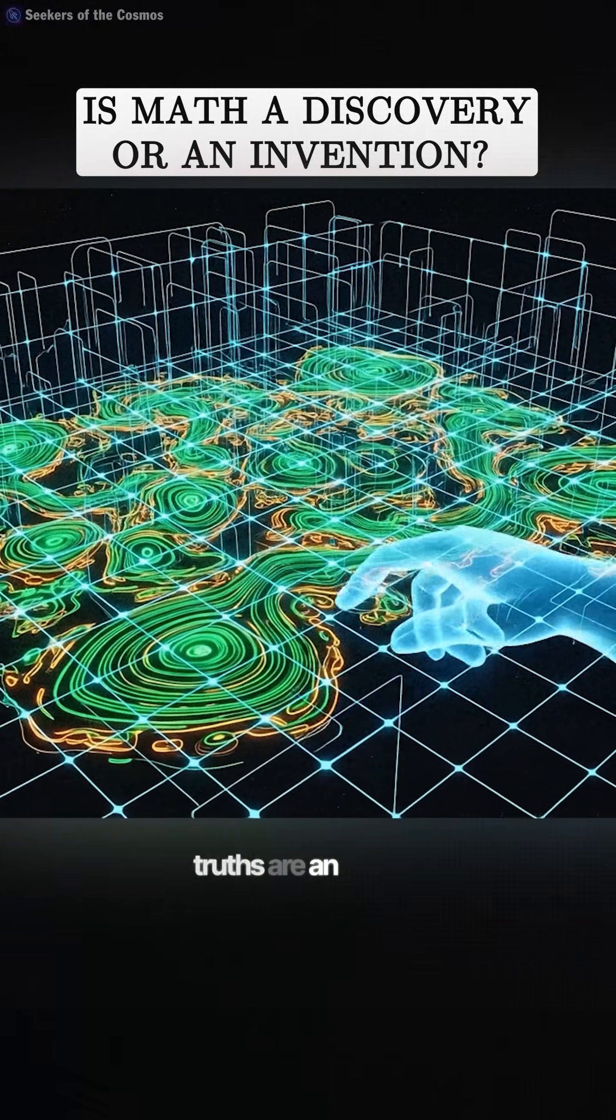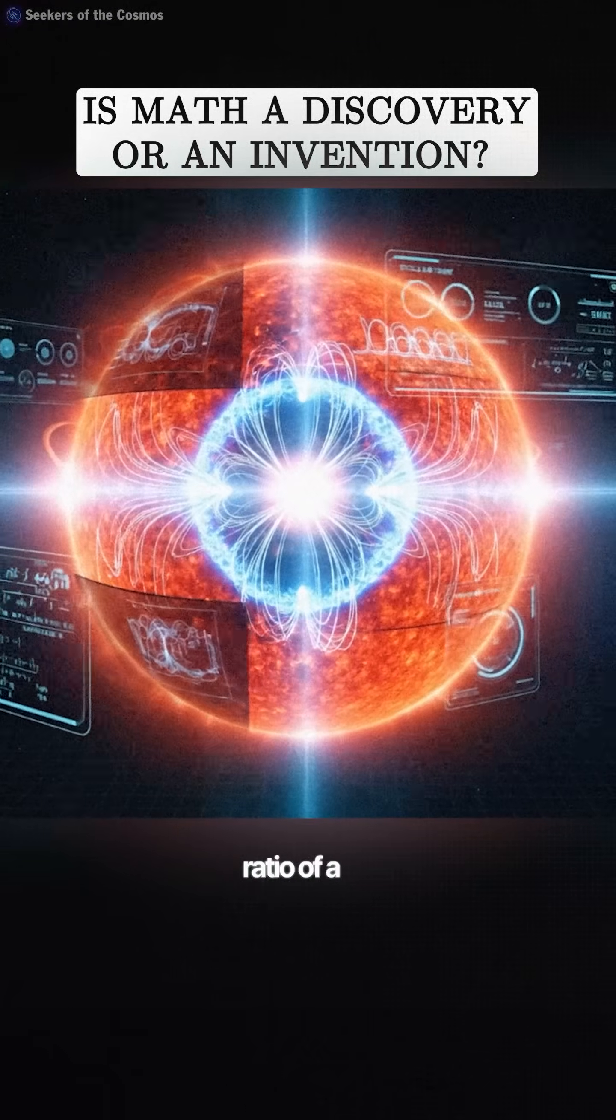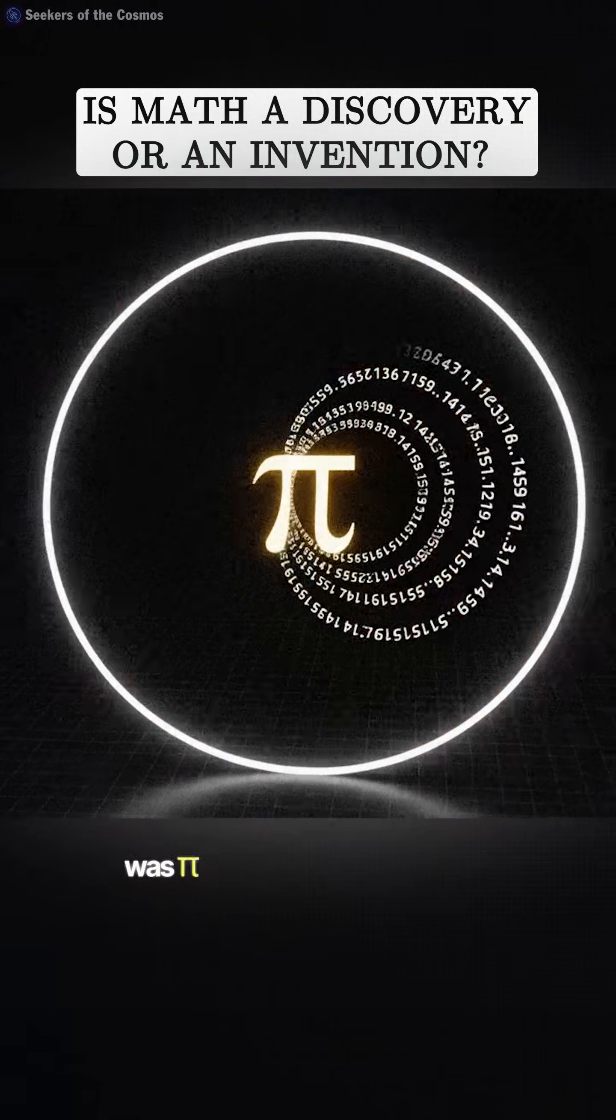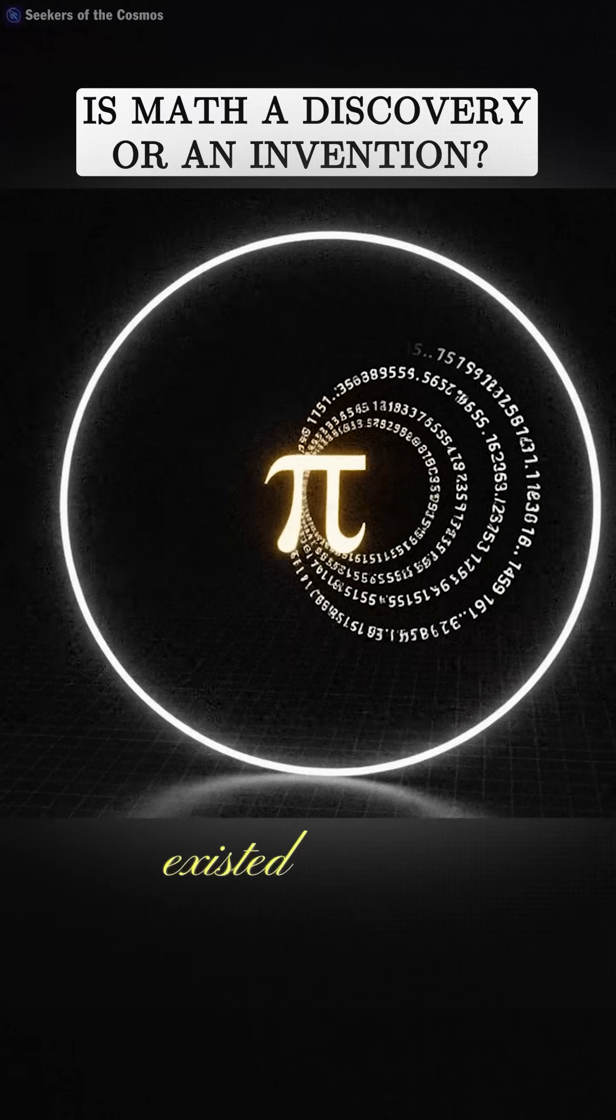This says that mathematical truths are an objective reality. The ratio of a circle's circumference to its diameter was pi, long before humans ever existed to calculate it.